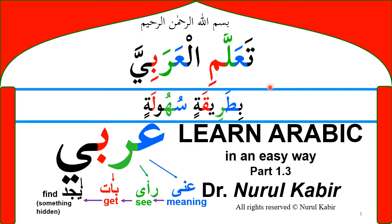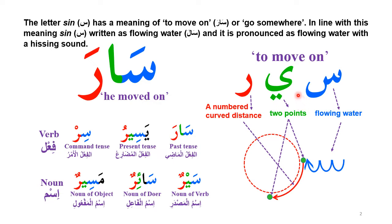This is part three of my series 'Learn Arabic in an Easy Way.' In this one, we will take a look at the meanings of the letter seen when it's in the third position. The letter seen has a meaning related to going somewhere or to move on. You'll notice that the letter seen is written like flowing water, and it is also pronounced with a hissing sound. So it makes perfect sense that one of the basic meanings of the letter seen is something moving.